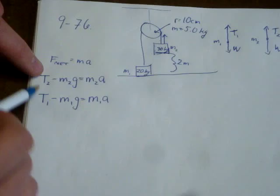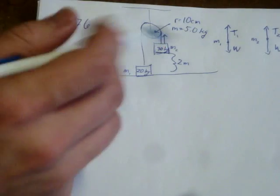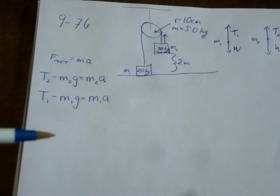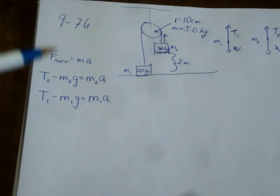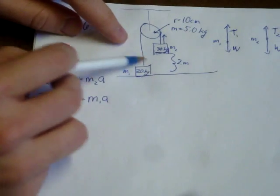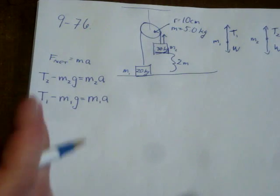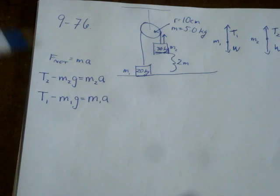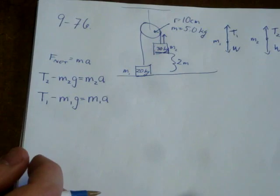Now, while the tensions here aren't equal to one another, the accelerations of these two things are. They're going to have to accelerate at the same rate or else we'd have some bunching of the cord or some weird thing where we'd have these reaching different speeds at different times and that's obviously not going to happen or else the string would break or something weird would have to occur.